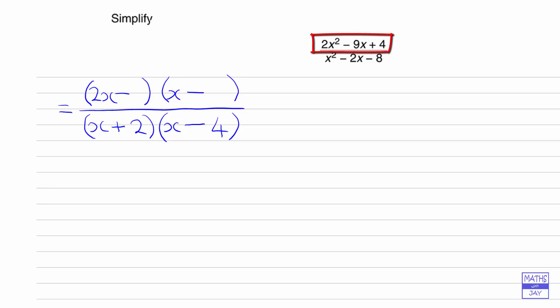In the bracket with 2x, we can't have an even number because then the whole bracket would have a factor of 2, and therefore the whole numerator would have a factor of 2. But we can see that 9x is not even, so we can't have either 2 or 4 in there. That's got to be 2x minus 1, and then we'll have x minus 4.